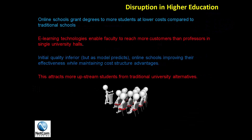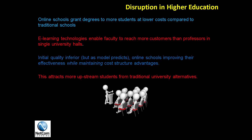Let's look at higher education as an example. Online schools that have no campuses, that only exist online, grant more degrees to more students at a lower cost compared to traditional schools. E-learning technologies enable faculty to reach more customers than a professor could in a single university hall. When online universities first became prominent after the internet became commercialized, the initial quality was inferior. But as the model predicts, online schools improved their effectiveness while maintaining their cost advantage.